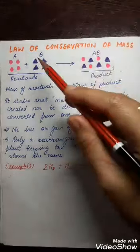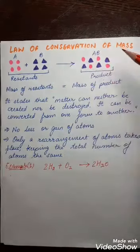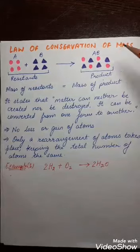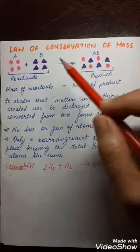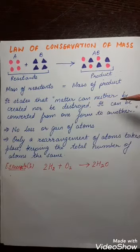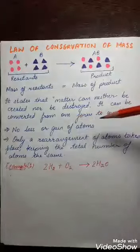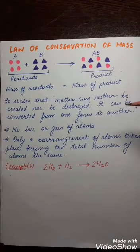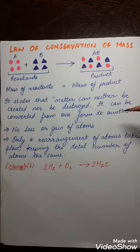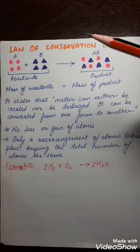Let us understand the law of conservation of mass. From the word itself, conservation of mass means mass is conserved — mass remains the same. This law states that matter can neither be created nor be destroyed. It can be converted from one form to another. There are three states of matter: liquid, solid, and gas. These forms of matter can change, but matter will neither be created nor destroyed.